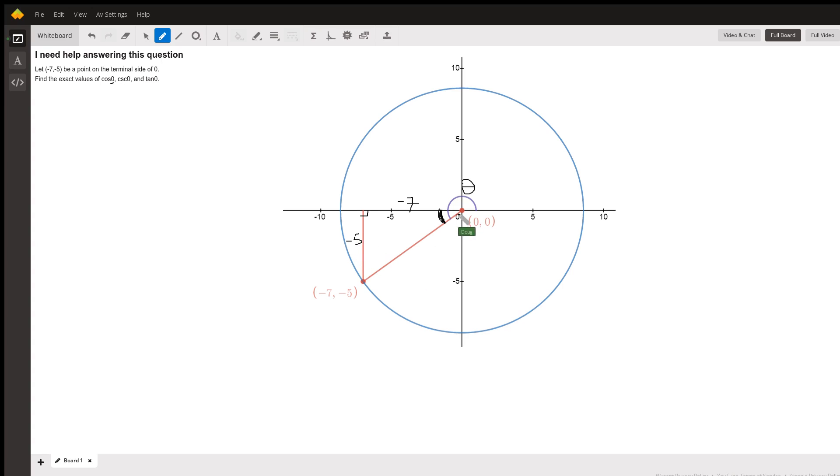And the hypotenuse of that triangle by the Pythagorean theorem is the square root of seven squared plus five squared, which is 74.